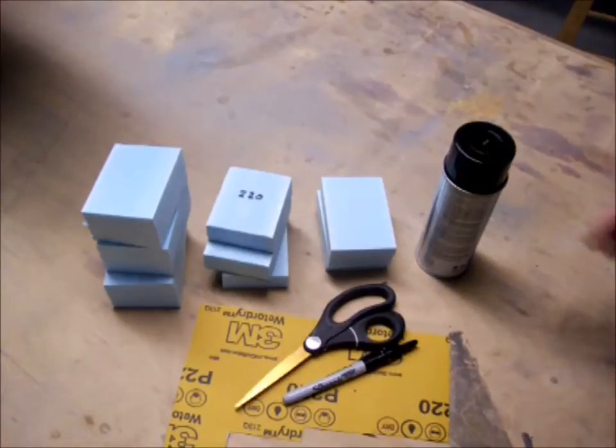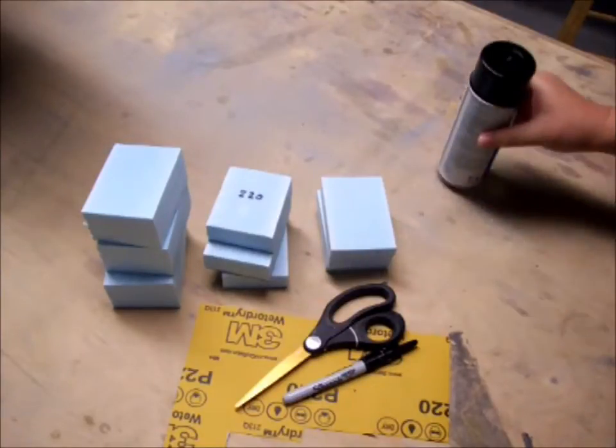I usually have my surfaces close enough where I can sand exclusively with 220 grit, but if you need to make coarser blocks, that's no problem. Let's talk about doing that real quick.